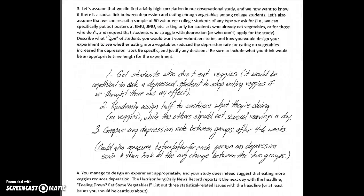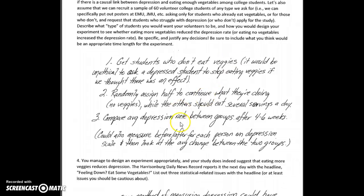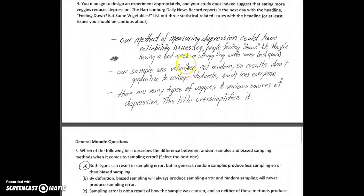On number three, when we're trying to conduct an experiment, random is still the key, but here it's random assignment. I would also say if you get students who don't eat veggies, it might be the most ethical thing to do, because if you're asking a depressed student to stop eating veggies when you think it's connected to mental health, that could push them deeper into depression and lead to a harmful outcome. So for the safety of the students, it's probably better to start with ones who don't eat veggies, then randomly assign half of them to start eating vegetables. There are lots of problems with this, mostly that you can't generalize to everyone — not even college students really — because our sample wasn't random; we had a convenient sample.